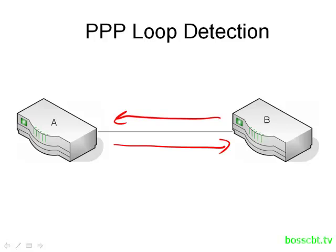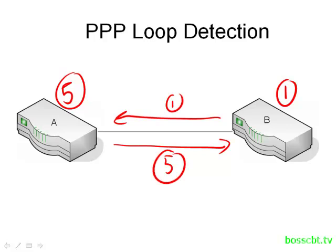When these two routers are communicating, they send back and forth LCP messages. Inside the LCP message is something called the magic number, and each router has its own magic number on this particular serial link. Let's say router B uses the magic number of 1 and router A uses the magic number of 5. All of router B's LCP messages are going to have a 1 in them and router A's will have a 5 in them. When router B receives an LCP message from router A, it sees the magic number and compares it to its own — as long as they're different, everything's okay.